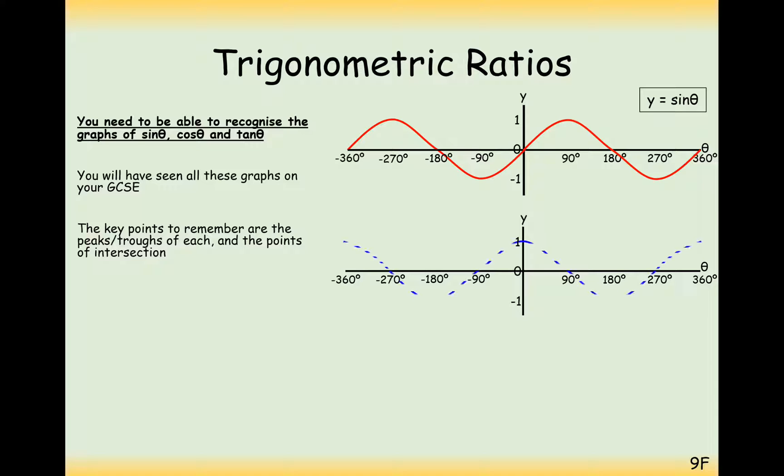The cos graph is almost identical to it, apart from it's just shifted left by 90 degrees. So it starts up at 1, comes straight down, goes through 180 and then back up to 360. These are curved lines here. Make sure you do draw them curved. If you draw them with just sharp points, that's not quite right.